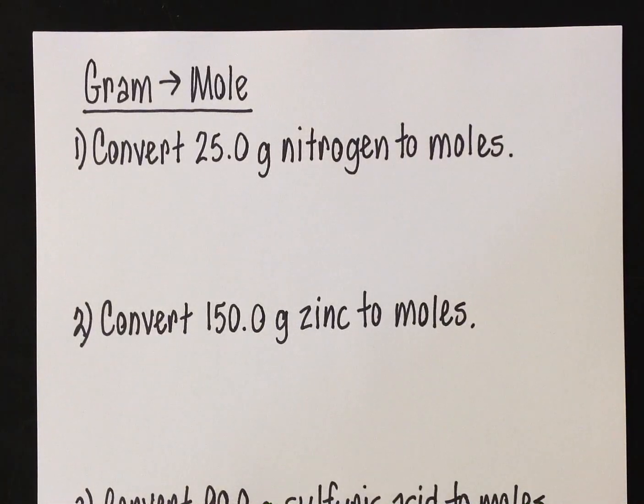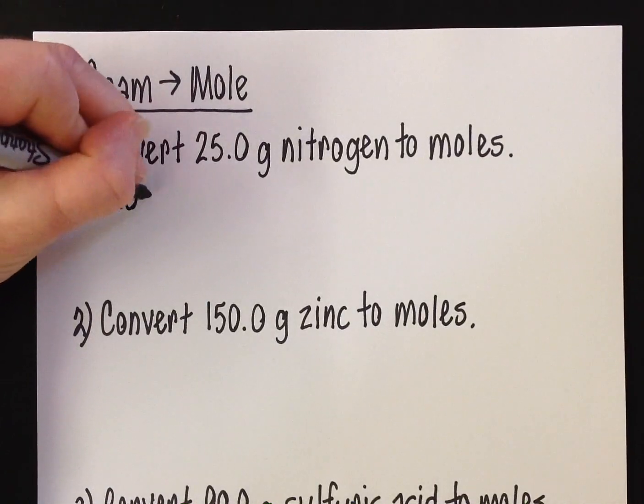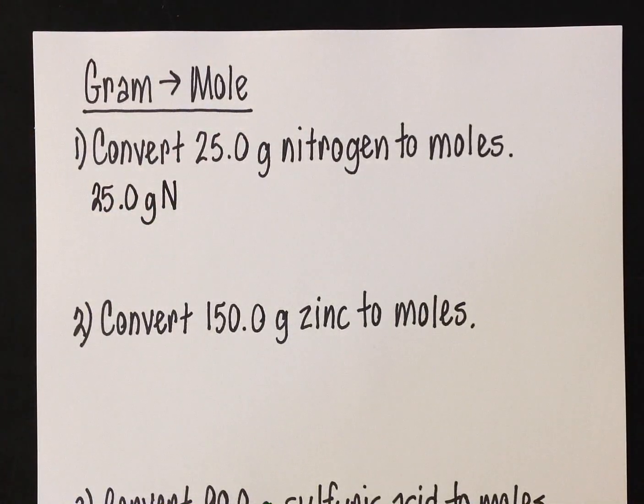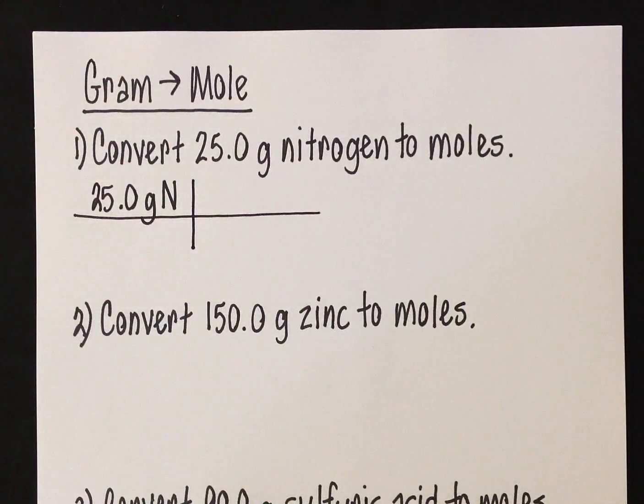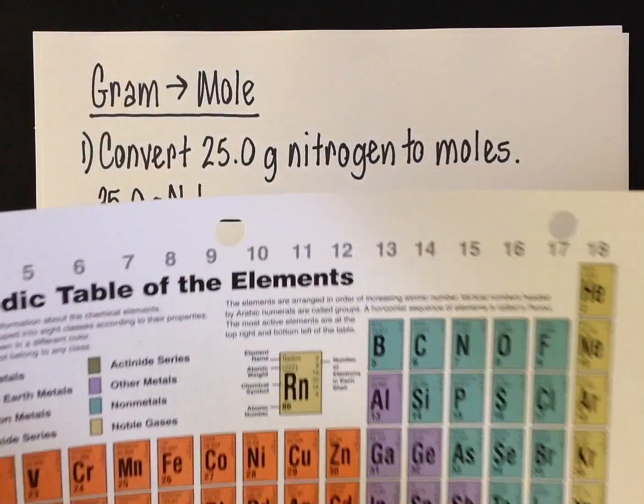The first problem says convert 25 grams of nitrogen to moles. What I always tell my students is first thing, write down the given—that's that number they gave you in the problem. In this case we're going to write down 25.0 grams. We don't want to write out the word nitrogen, that's going to take up way too much space, but we know that the chemical symbol for nitrogen is N. Then I tell my students draw a long line and a short line. This is called factor label, dimensional analysis—some people call it fence post. It's just a great way to solve a chemistry problem. Now that we've got 25 grams of nitrogen, we know they gave us grams and they want moles. You ask yourself, what kind of tool do I have in my toolbox to help me toggle back and forth between gram and mole? And that would be the molar mass.